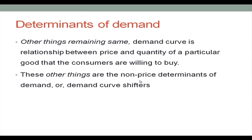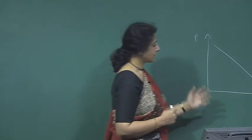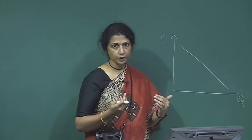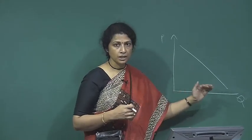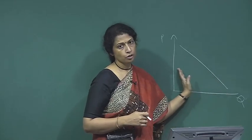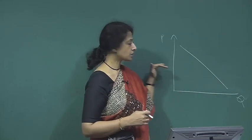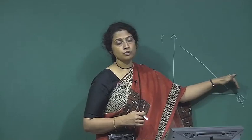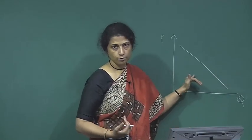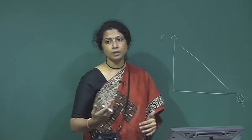Focusing on 'other things' — these are the non-price determinants of demand, or demand curve shifters. If any of the variables that determine demand change, the demand curve is going to shift right or left. That is, for the same price, the consumer is going to demand either more or less of that good depending on which variable has changed.